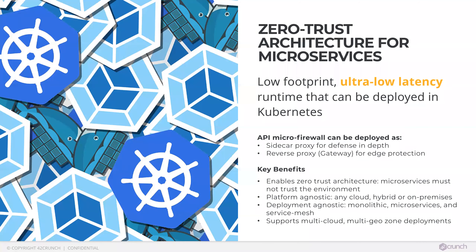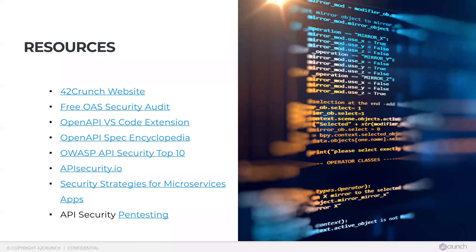The runtime has been built to be deployed in such environments and to support a zero trust architecture. It has a very low footprint, can be deployed as a sidecar or reverse proxy, runs in any type of cloud — on-premise, public, private, or hybrid — and is compatible with monolithic applications, microservices, or service mesh environments. You can deploy this application-level security across your entire Kubernetes deployments, whatever type of application you've chosen to create.